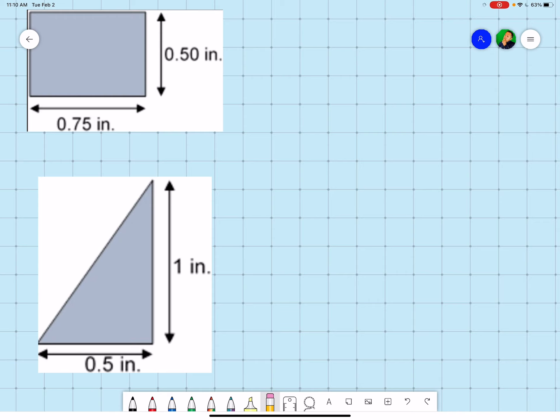For the rectangle, we know that it's going to be half of the width and half of the height. So we're going to have our base, which is 0.75 divided by 2. Get our answer there, and that's going to be our x value.